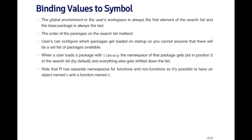When a user loads a package with the library function, the namespace of that package — the environment containing all the symbols and their values — gets put in the second position of the search list, right behind the global environment. Everything else gets pushed down one level, so the search will include that new package in addition to all the other packages originally on the search list.